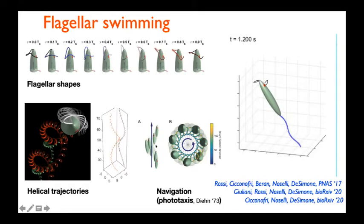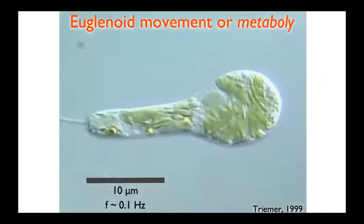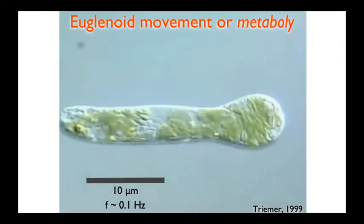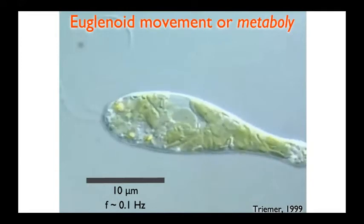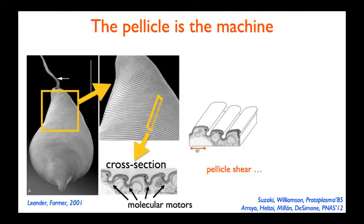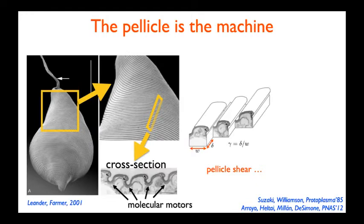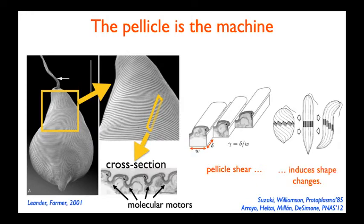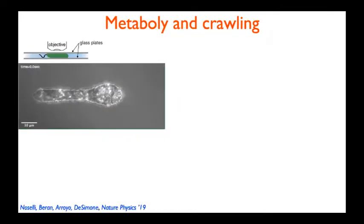Moving to metaboly, we know that metaboly consists of large changes of body shape that are made possible by the pellicle structure of Euglena, which is made of strips that can slide one on the other at the common edge. In this common edge between two adjacent strips, there are microtubules and molecular motors that walk along microtubules and push the strips so that they can slide one relative to the neighboring one, producing shears that are in turn responsible for shape changes, as recognized by Suzaki and Williamson.